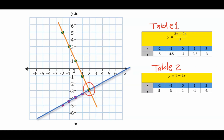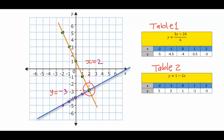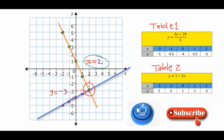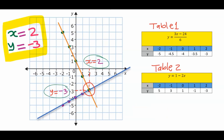Now consider the point where the two lines cross each other. From that point, trace a line to the x-axis and to the y-axis respectively. On the x-axis, our answer is x equals 2, and on the y-axis, our answer is y equals minus 3. This is the answer for the simultaneous equations.